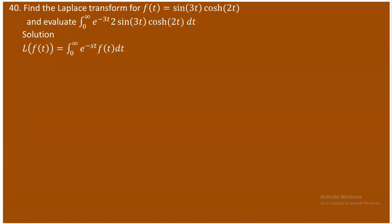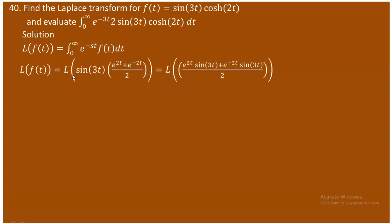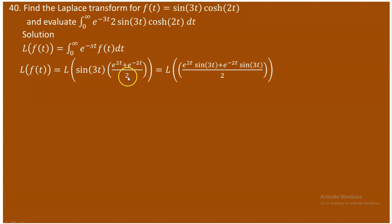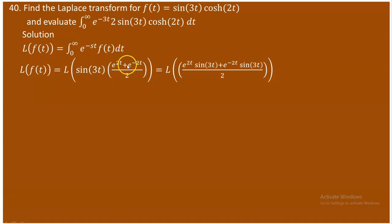The Laplace transform of a function f(t) is defined by the standard integral, provided it exists. Recalling the cosine hyperbolic definition, cosh(2t) equals e^(2t) plus e^(-2t) over 2, since cosh(x) equals e^x plus e^(-x) over 2, with x replaced by 2t.